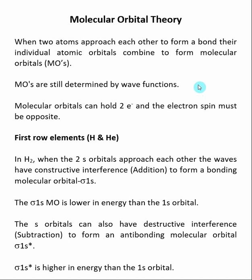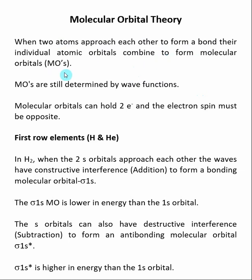In addition to valence bond theory, we can describe covalent bonding using molecular orbital theory. The idea here is that when two atoms approach each other to form a bond, their individual atomic orbitals combine to form molecular orbitals.